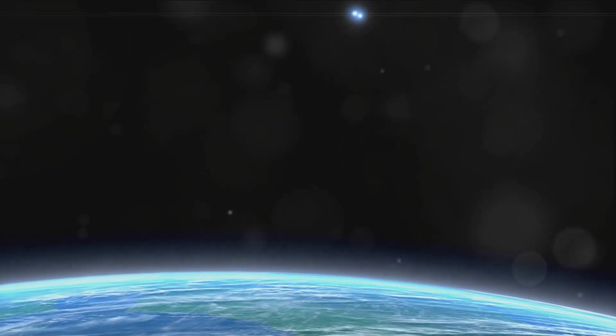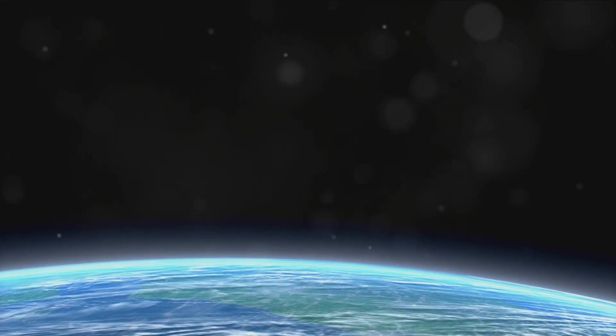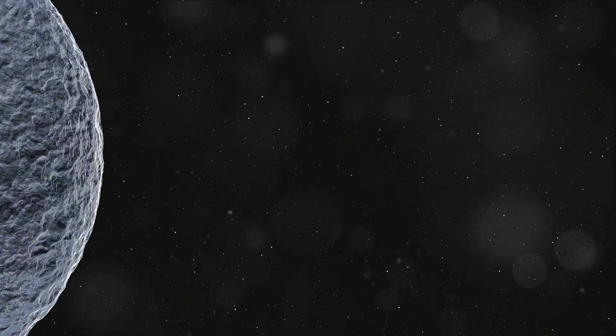Next up, we have Kepler 385c. This planet is about 1.7 times the size of Earth. It has an orbit period of about seven days. This swift orbit means that 385c is also close to its host star, so it too has a sizzling surface. But what sets it apart is its unique atmosphere. It's speculated to have a thick layer of clouds, potentially made of silicate particles. Imagine that, a world where it rains rocks.